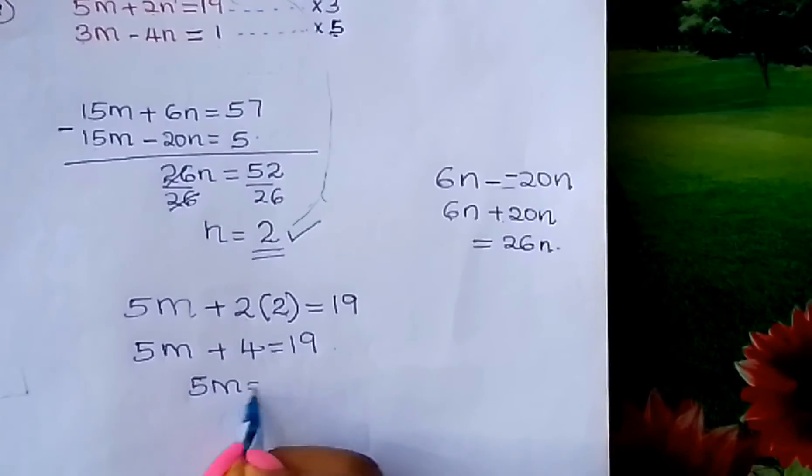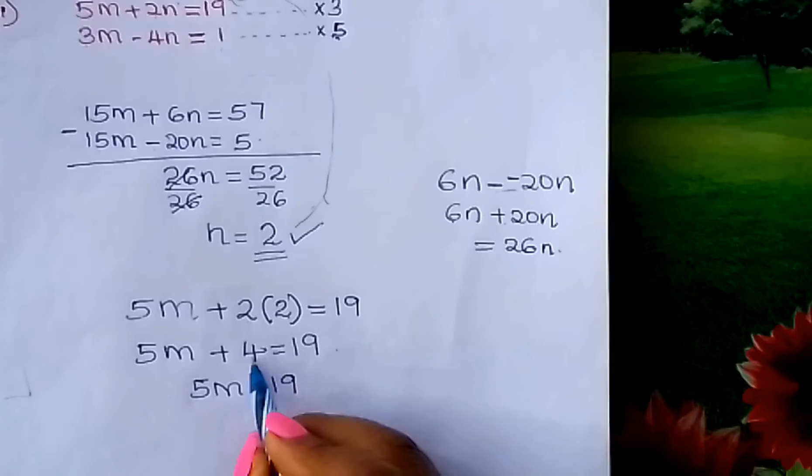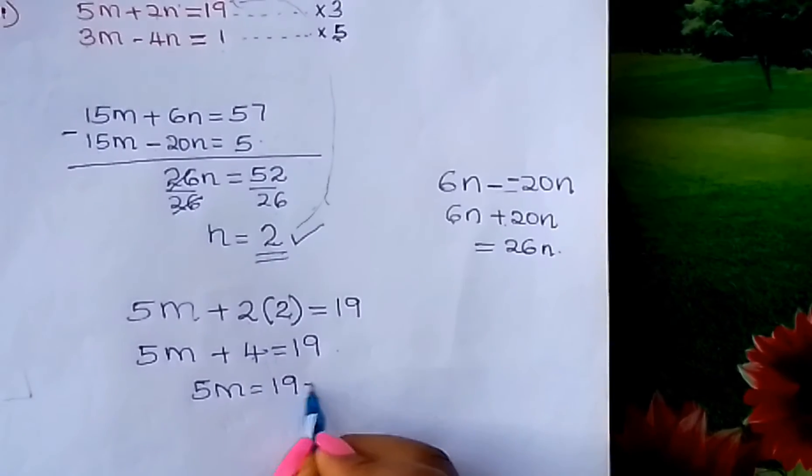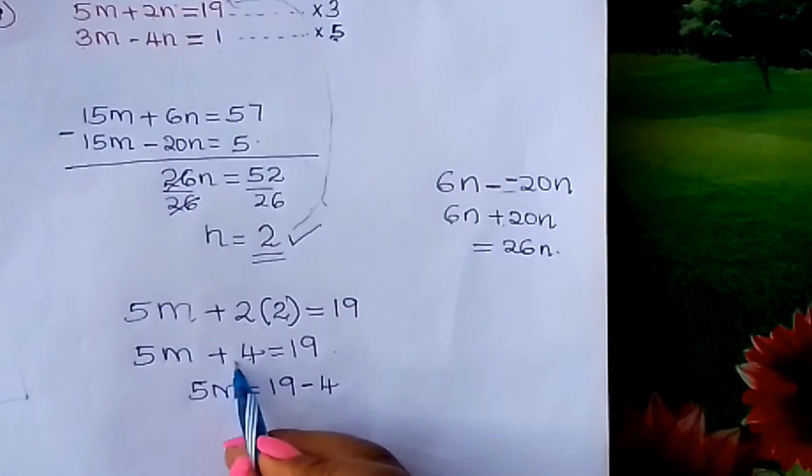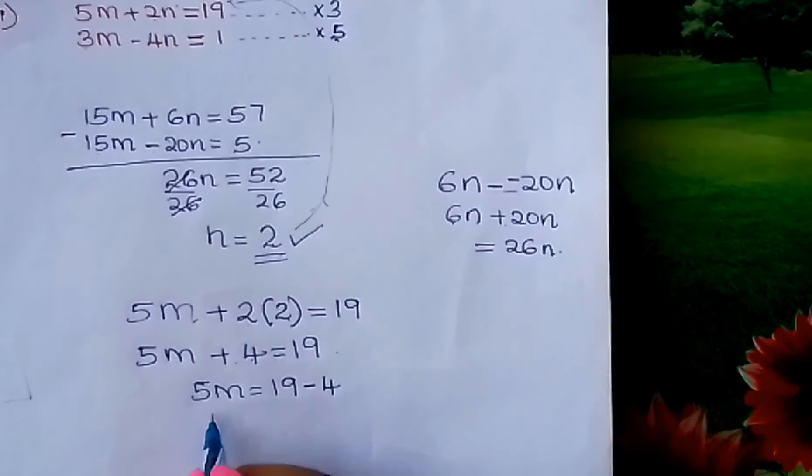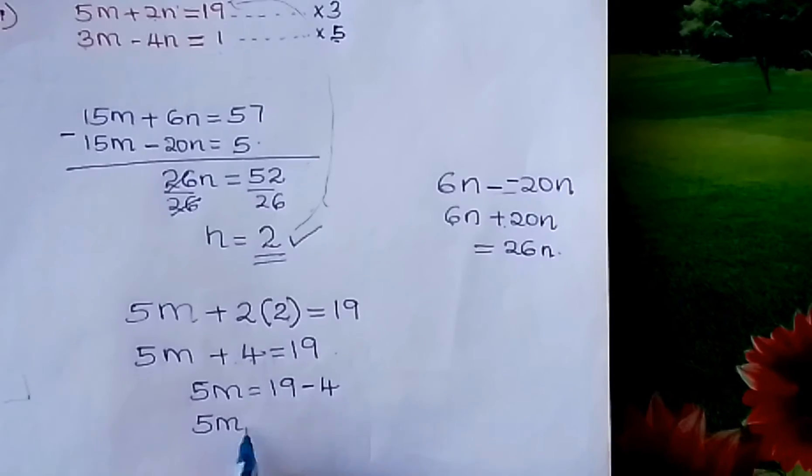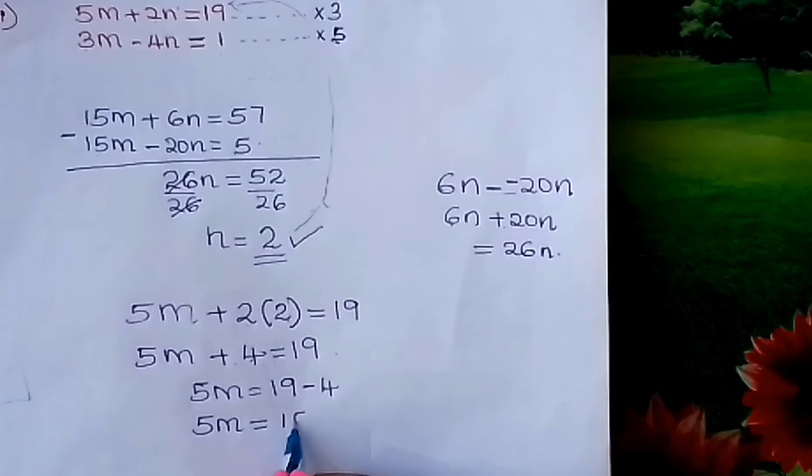So 5M equals 19. Take 4 to the other side. It was plus, taking it to the other side it becomes minus. Therefore 5M equals 15.